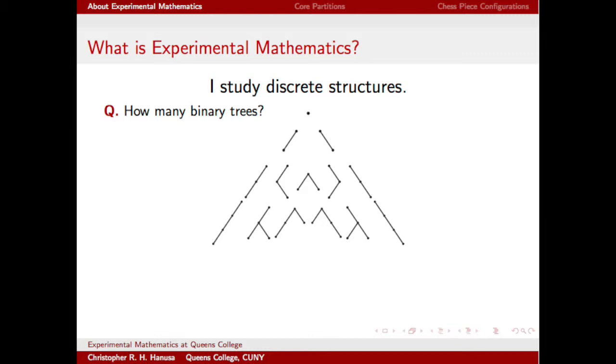I consider myself to be an experimental mathematician. I study discrete objects, objects like these binary trees, where there is a top node, and every node is allowed to have a right child and or a left child. There are infinitely many of them, but when we restrict or group these objects based on some parameter or combinatorial statistic, then there are only a finite number of them, and we can count them.